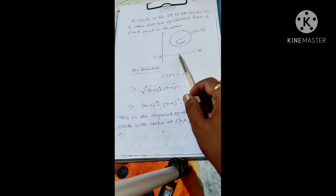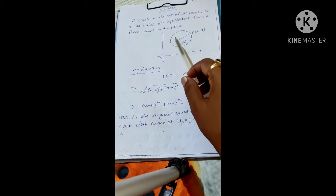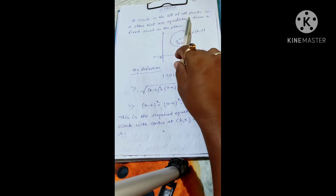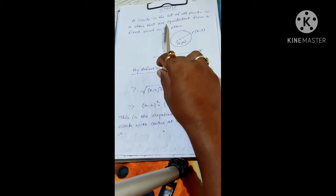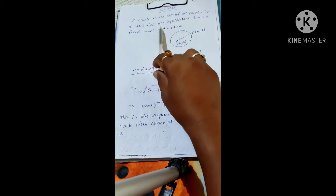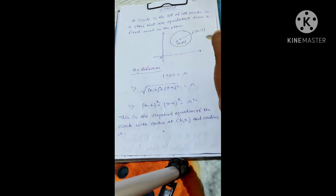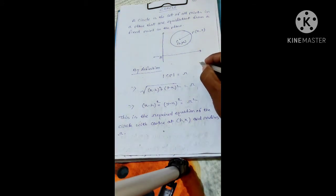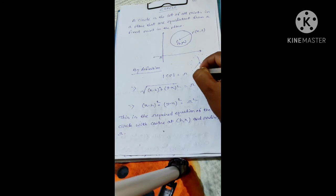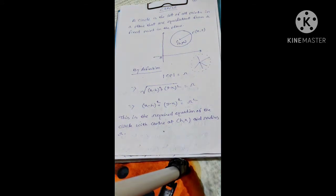First of all, we should know what is a circle. A circle is the set of all points in a plane that are equidistant from a fixed point in the plane. Suppose I take a fixed point, and from this fixed point at equidistant, if I take a cluster of points at equidistant from a fixed point, then what path it will trace? That path is called a circle.